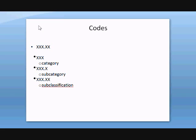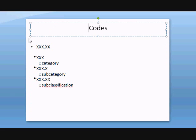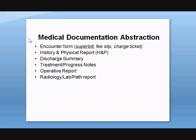As far as the book and the codes go, we will be concentrating mostly on Volume 1 and Volume 2. The codes in those volumes follow this structure: you have three digits to begin with, and then two trailing digits. The three beginning digits are known as the category digits or category codes. The addition of a fourth digit is the subcategory, and the fifth digit is the subclassification.